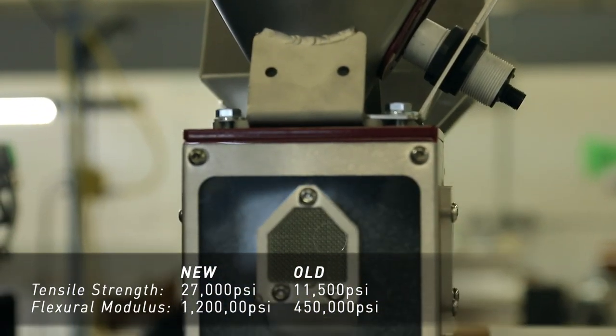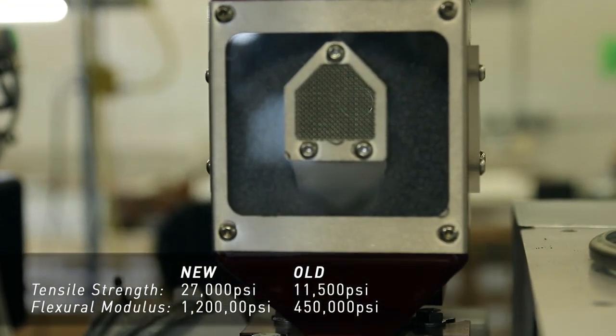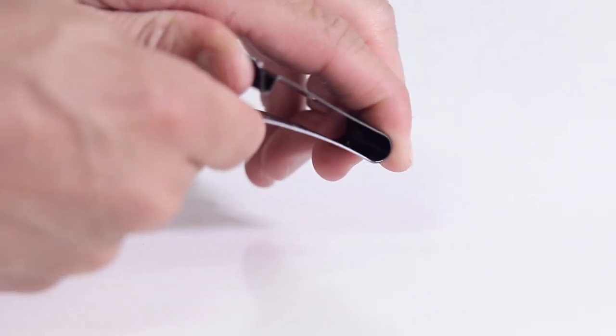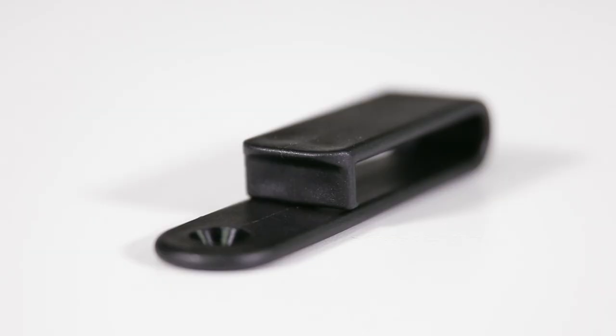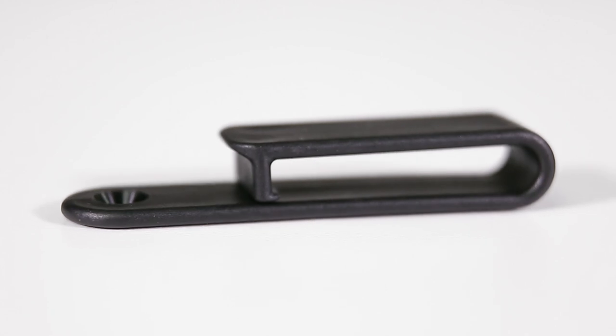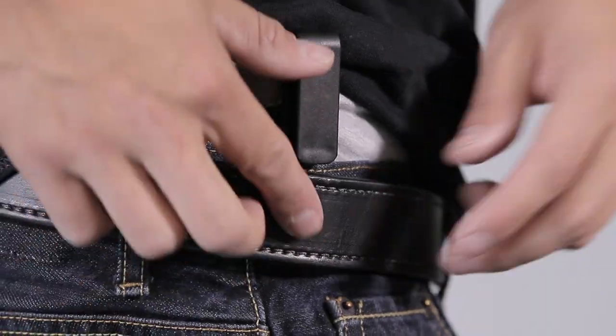Our new clips come at no additional charge with any inside the waistband holster. Compared to metal clips which bend far too easily, our new material stands up to anything life throws your way. Made with a soft finger grip and hook for your belt, it's ergonomic and functional.